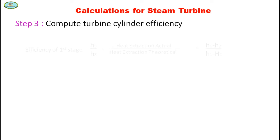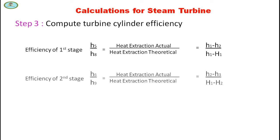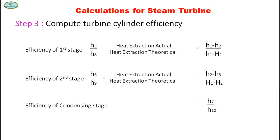Efficiency of the first stage is actual heat extraction divided by theoretical heat extraction, so it equals (H1 minus H2) divided by (H1 minus H1_theoretical). Similarly, efficiency of the condensing stage is computed using the corresponding actual and theoretical heat extraction values for that stage.